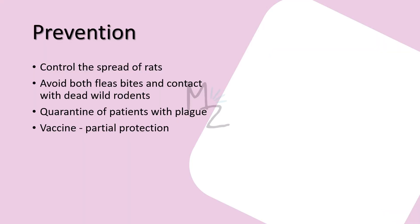Prevention of plague involves controlling the spread of rats and avoiding both flea bites and contact with dead wild rodents. A patient with plague must be placed in strict isolation and quarantined for 72 hours after antibiotic therapy is started. A vaccine consisting of formerly killed organisms provides partial protection against bubonic plague, but not pneumonic plague.